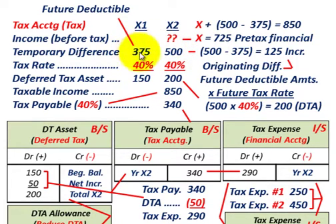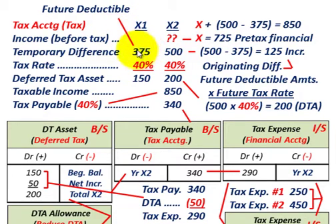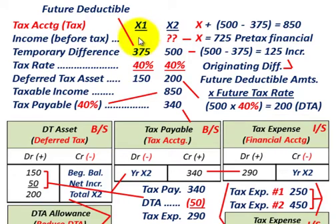Let's look at what we're talking about with this temporary difference. Looking at year X1, the $375,000 is actually going to be a future deductible amount. For our tax accounting purposes, this is going to be some revenue that we're including in our income before taxes.